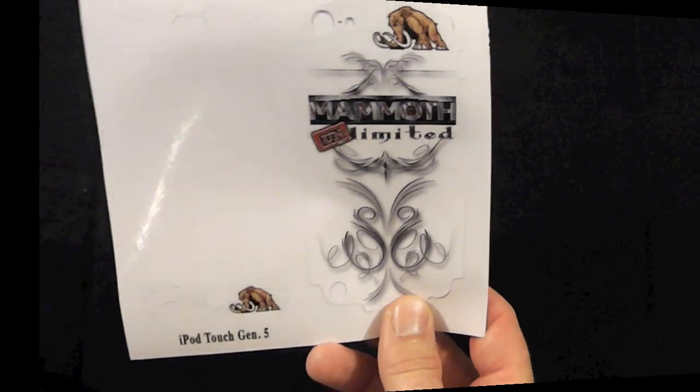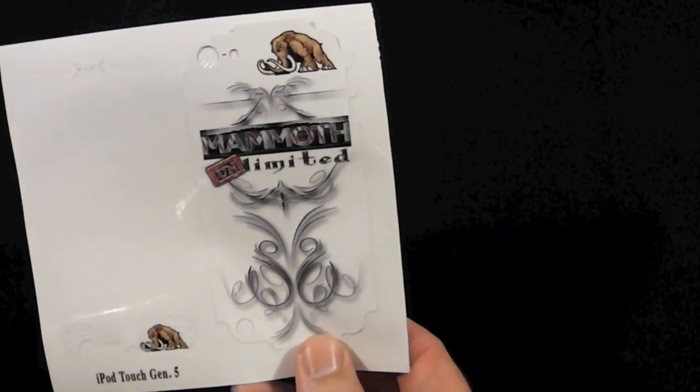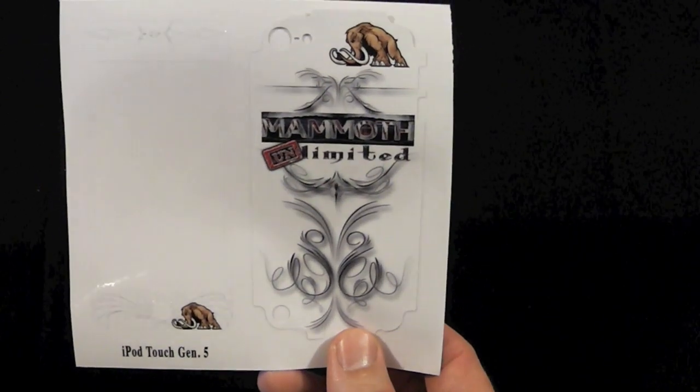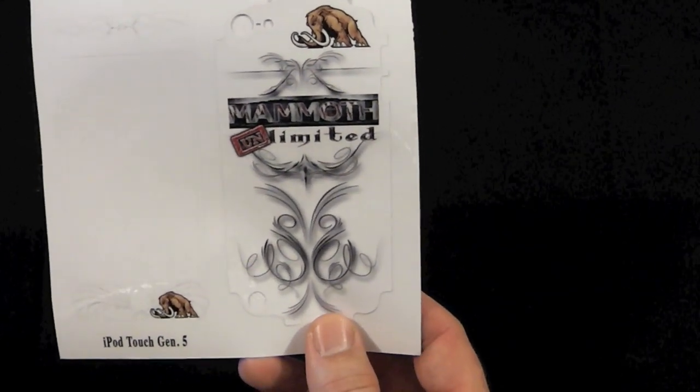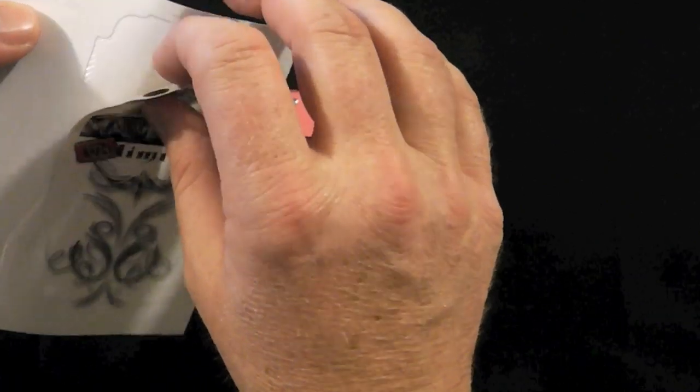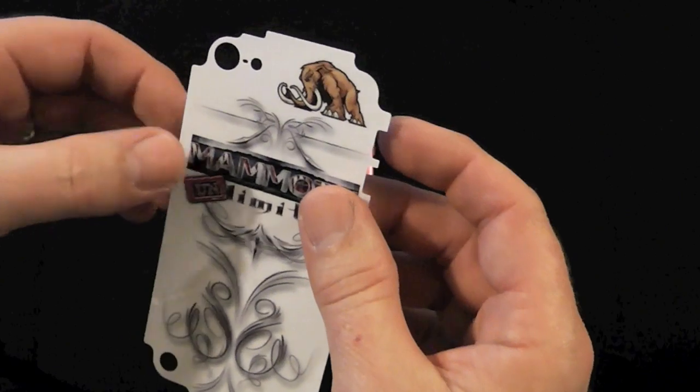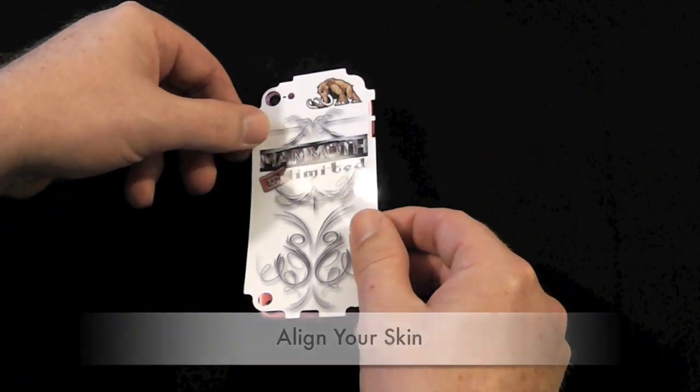Here's one of our Mammoth Signature skins that we're going to be using for the demonstration today. This is the way your skin will come, it will be the front and back on one sheet and it will be pretty much ready to go. You just remove it one at a time, like remove the back from the backing paper and then there's the back and you just line it up and press it down.